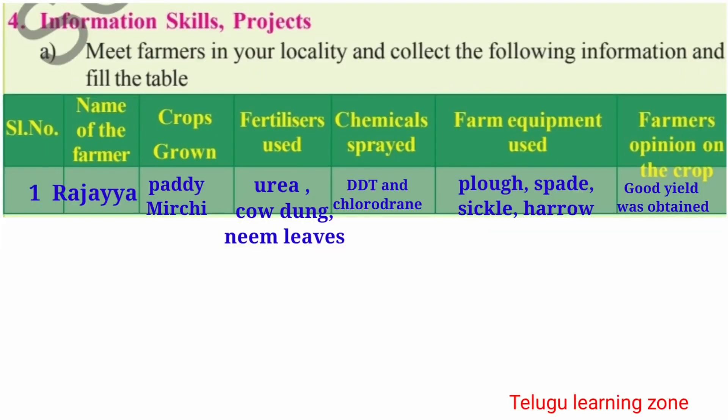Serial No. 1 — Name of the farmer: Rajaya. Crops grown: Paddy, Mirchi. Fertilizers used: Urea, Cow dung, Neem leaves. Chemicals sprayed: DDT and Chlorodrain. Farm equipment used: Plow, Spade, Sickle, Harrow. Farmer's opinion on the crop: Good yield was obtained.